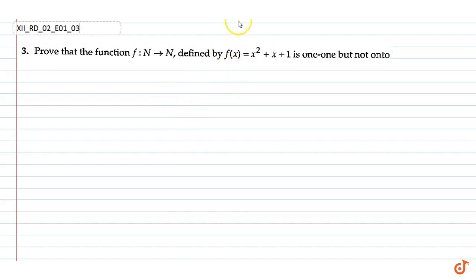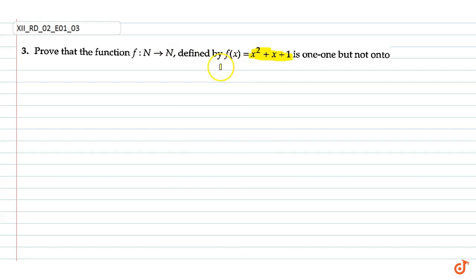In this question we have to prove that the function f, defined as f(x) = x² + x + 1, from ℕ to ℕ where ℕ is the set of all natural numbers, is one-one but not onto.